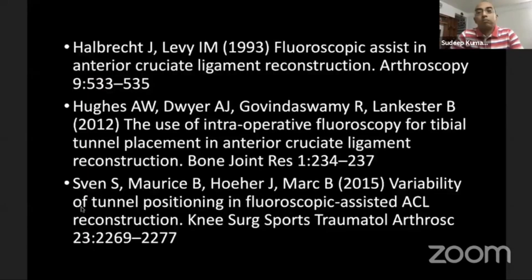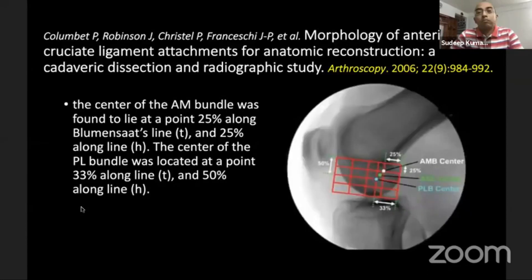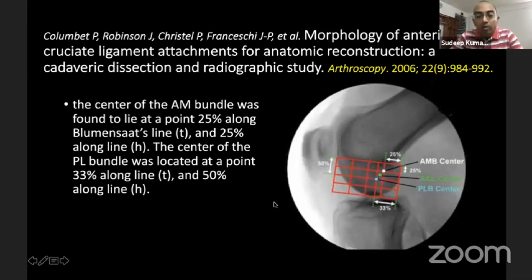What we came across during discussion is something called the Bernard and Hurtle grid. It originated from anatomical studies that identified where the two bundles of the ACL attach on the femur and tibia — determining the exact anatomical points for both single bundle and double bundle reconstruction.